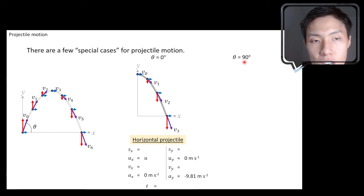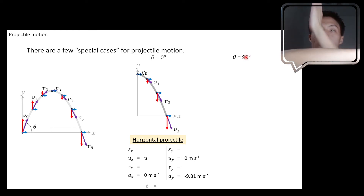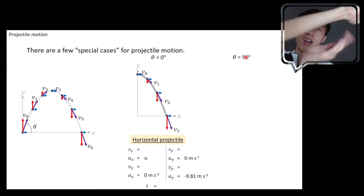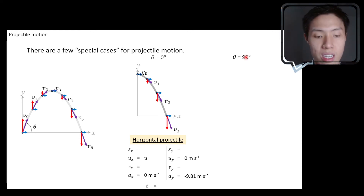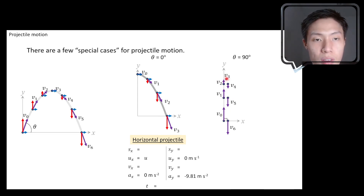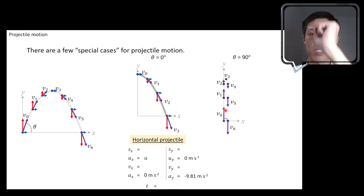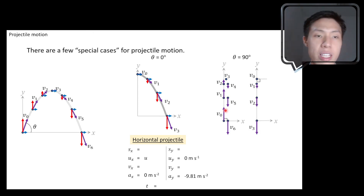Now let's look at another special case: launching at 90 degrees with respect to the horizontal. If you launch it at 90 degrees, you can launch it upwards or downwards. You can launch it upwards at 90 degrees — it will go upwards, then fall back down. Or you can drop it from the highest point downward. All these motions happen on one single line; it's a one-dimensional motion. I show it as a U-turn so you don't confuse the upward and downward motion, but they all happen on the same vertical line.